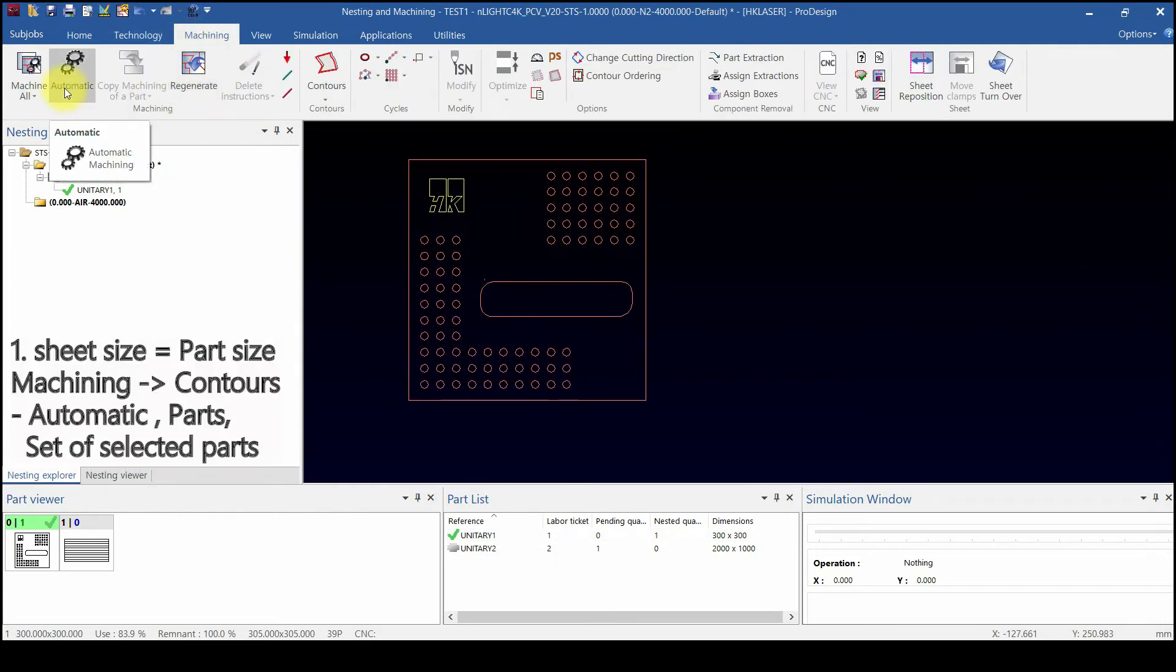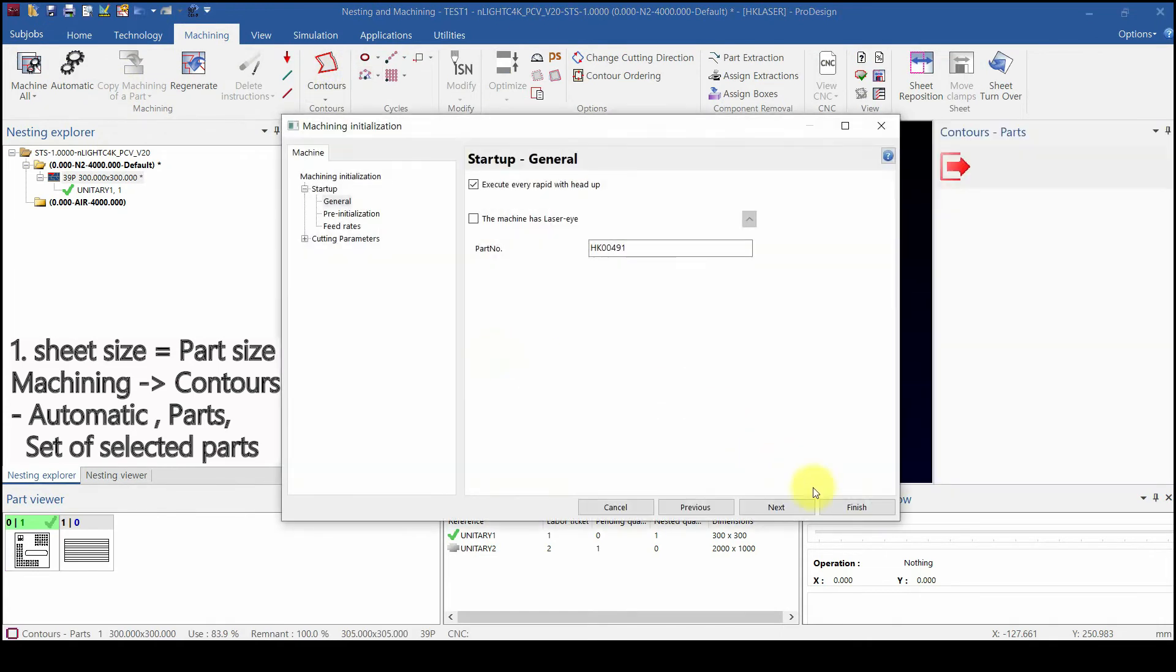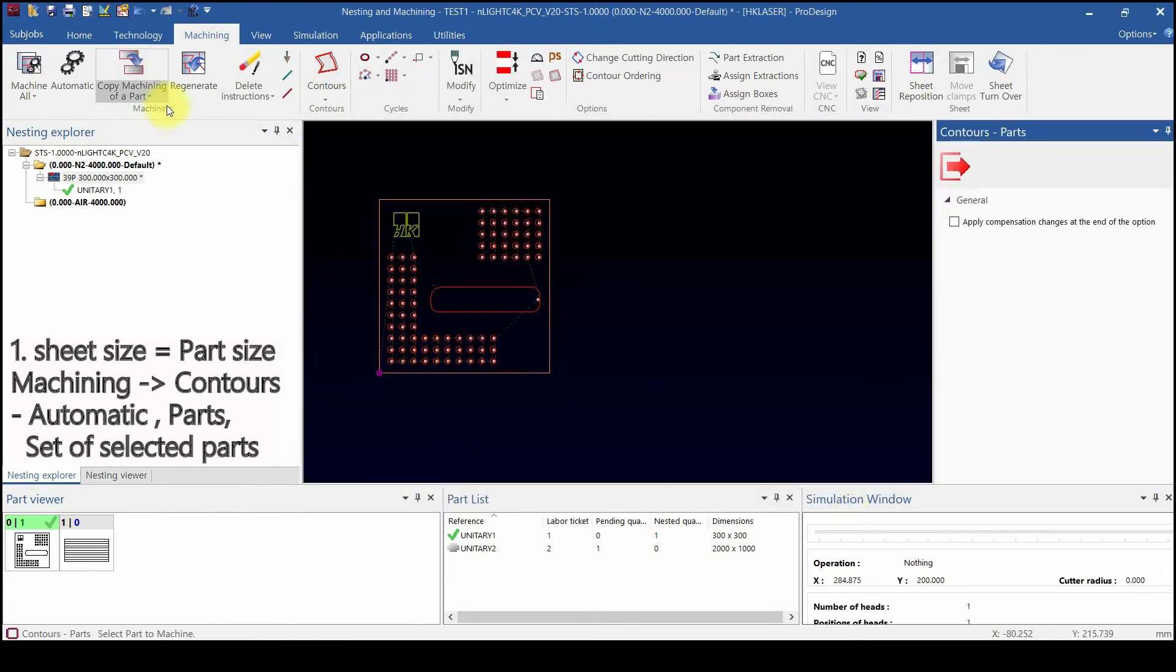Let's do machining. If part size is same as material or cut by part size, then make machining by automatic machining or part.